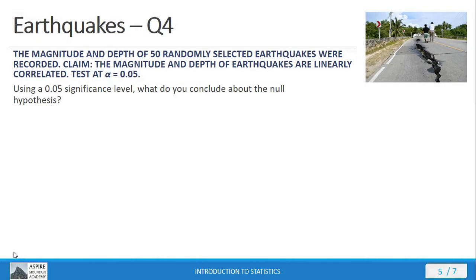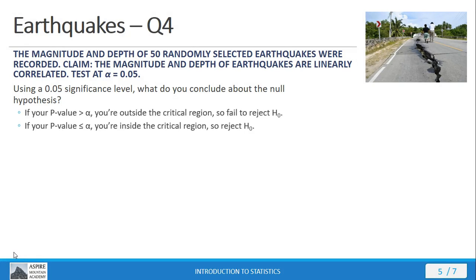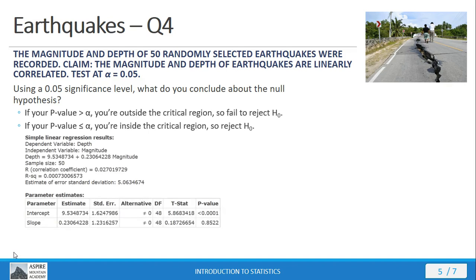Now that we've got those numbers, we can make a conclusion about the null hypothesis. We can use the p-value like we've always used with hypothesis testing. Our p-value from our results window is 0.8522 — much, much bigger than our 5% significance level. Therefore, we're outside the region of rejection and we fail to reject the null hypothesis. That means there is no linear correlation. When you fail to reject the null hypothesis, that means it could be true. The null hypothesis says rho equals zero, and zero means there's no correlation.